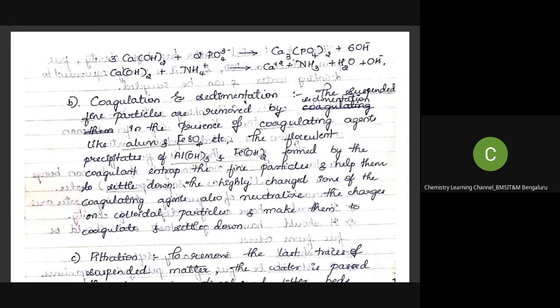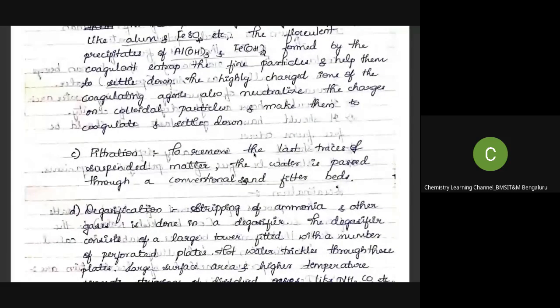For coagulation and sedimentation of any remaining fine particles, coagulating agents like alum and ferrous sulfate are added. These precipitate as aluminum hydroxide and ferrous hydroxide, forming flocs that settle down due to their heavier weight. Once settled, they are sent for filtration.